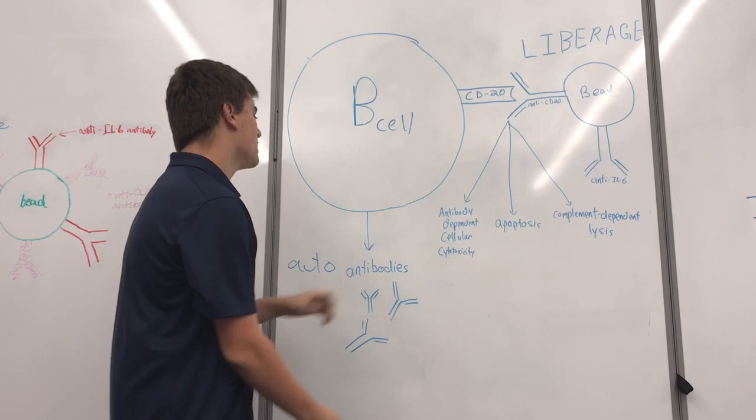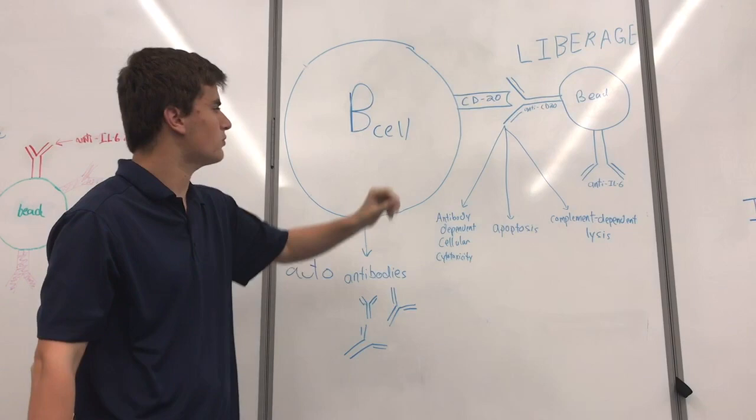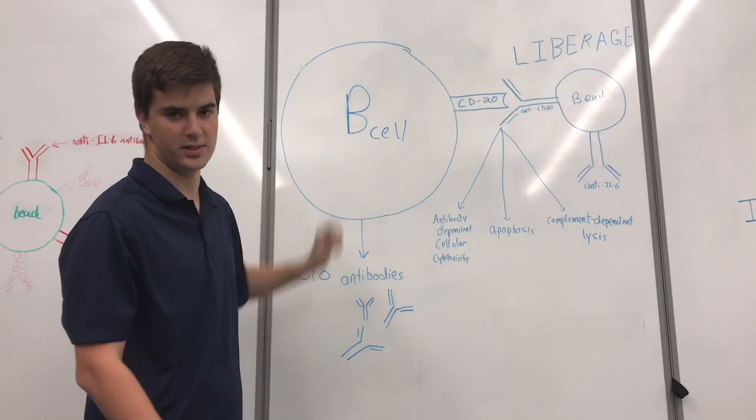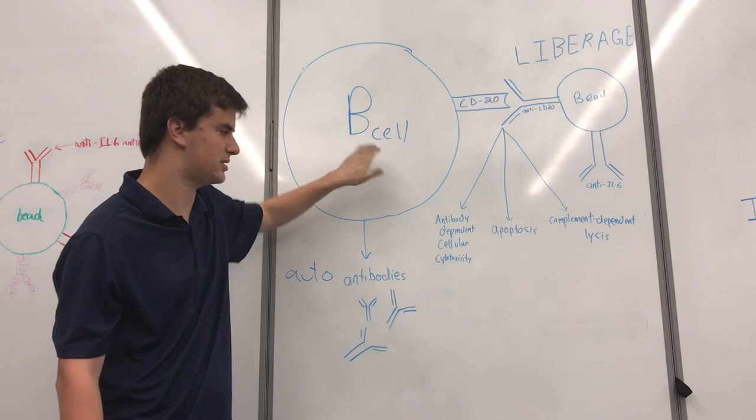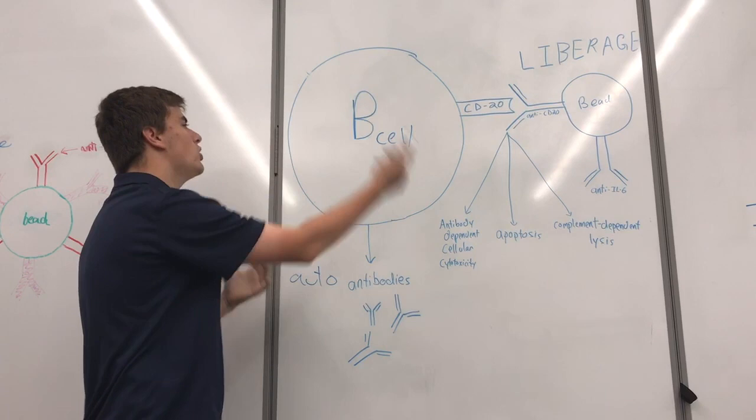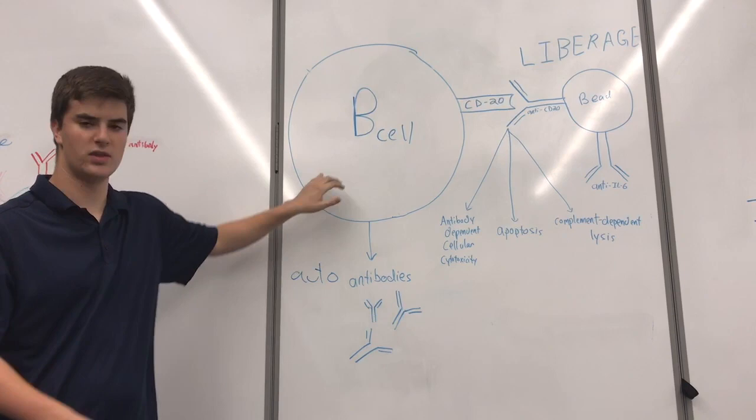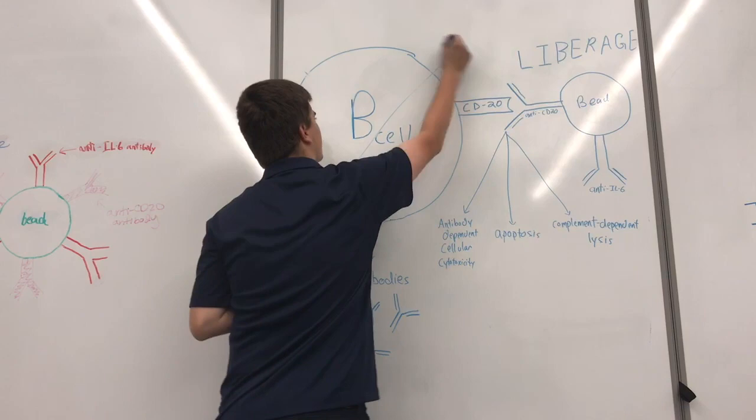Now, what Liveridge does is that it contains an anti-CD20 antibody which binds to CD20 and produces three main responses. First of all, antibody-dependent cellular cytotoxicity, whereby an effector cell, usually a T cell, will bind to the anti-CD20 antibody and kill the B cell. It can also produce apoptosis, which is simply the programmed cell death of the B cell. And finally, it can produce complement-dependent lysis, whereby the B cell is coated in complement protein which initiates the complement cascade which will end up with the lysis of the B cell. So, by binding anti-CD20 to CD20, we are effectively eliminating these autoreactive B cells.